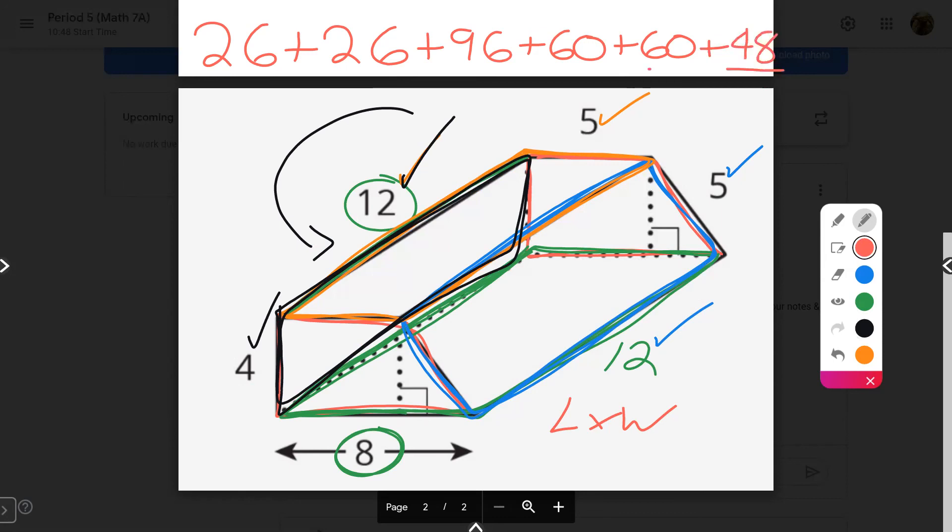So now, ladies and gentlemen, this right here, what you're taking a look at are all six faces, the area of each face individually. And to calculate a surface area, I need to add them all up. So slowly but surely, 26 plus 26 plus 96 plus 60 plus 60 plus 48 comes out to be 316. And since there's no units, this would be units squared for surface area. So 316 units squared is the surface area for this trapezoidal prism.